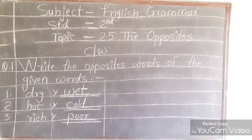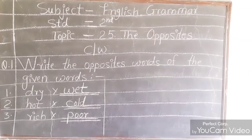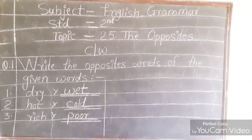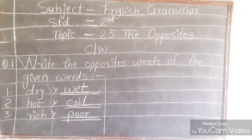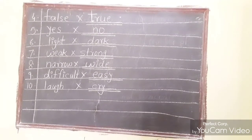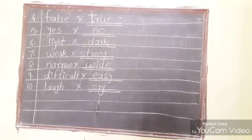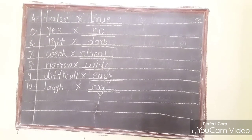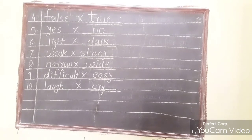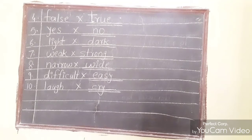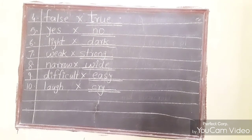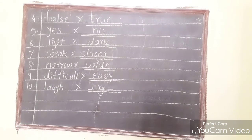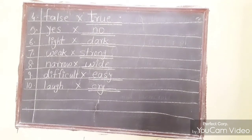Look at the board. After explanation, I wrote the opposite words of the given words. Like this, we are going to write the opposite of the remaining words. Opposite of false will be true. Opposite of yes will be no. Opposite of light will be dark. Opposite of weak will be strong. Opposite of narrow will be wide. Opposite of difficult will be easy. Opposite of laugh will be cry.